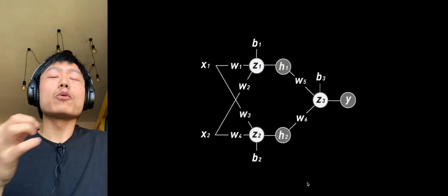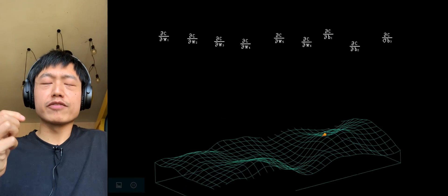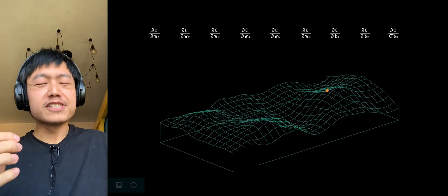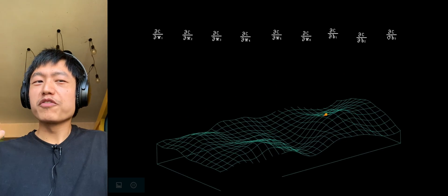Let's go back to this network structure. If we want to find the partial derivative of the loss function c to 9 functions, we first have to do some preparatory work.